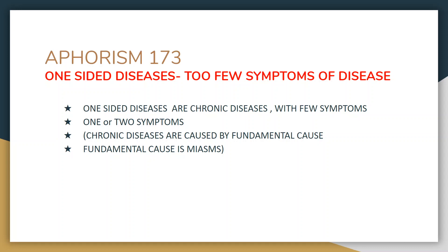One-sided diseases are nothing but diseases with too few symptoms. One-sided diseases are chronic diseases with few symptoms — there will be one or two prominent symptoms. Chronic diseases are caused by a fundamental cause, and that fundamental cause is nothing but miasms. So one-sided diseases are chronic diseases with few symptoms and they are miasmatic in origin.